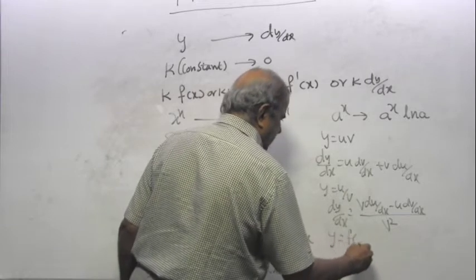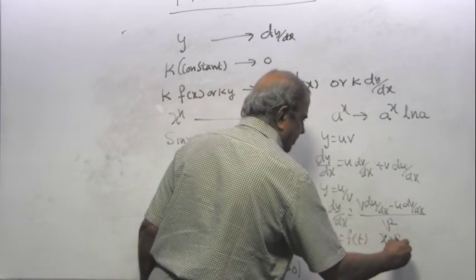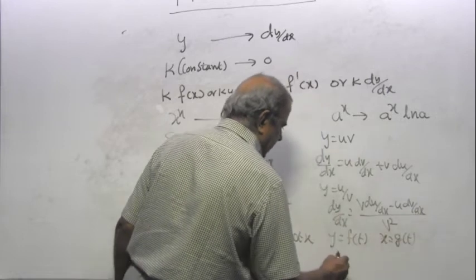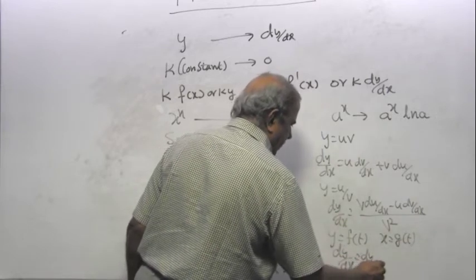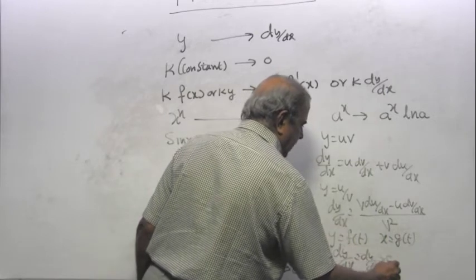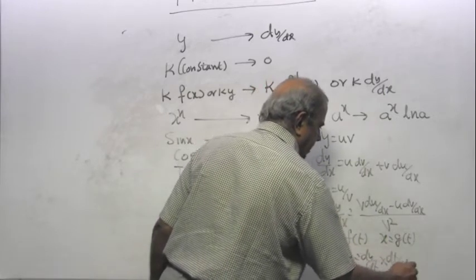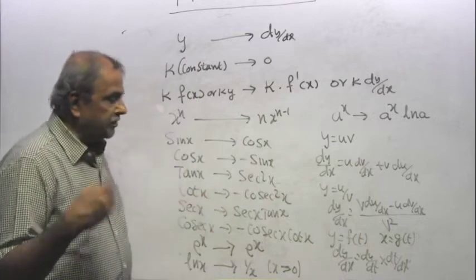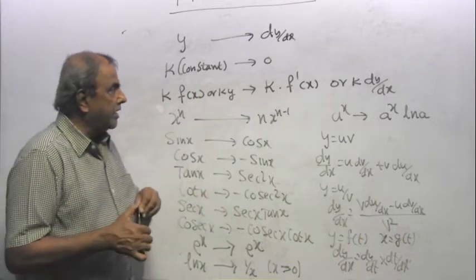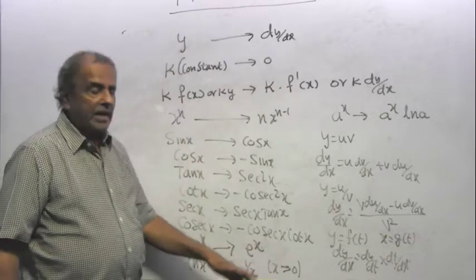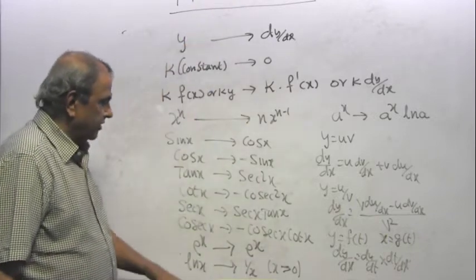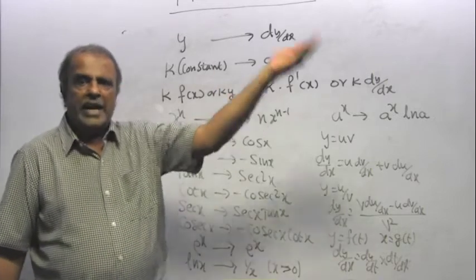If Y is a function of T, X is a function of T, then chain rule, DY by DX equal to DY by DT times DT by DX. In the formula book you have implicit differentiation as well. I do not want to write it here. I will take it up separately. You do not have to copy this formula. At least look at these ones and then look at the handout.